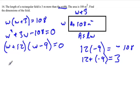So we have two possible answers here. W is, the width is equal to negative 12, which is not possible because we can't have a negative width. Or W is equal to 9.